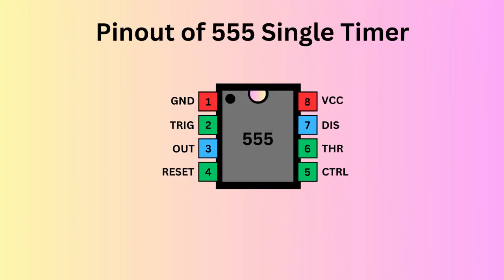The 555 timer IC comes with eight pins. There is a notch or a dot on the chip's body. Pin 1, located at the top left, serves as the ground or ground supply.